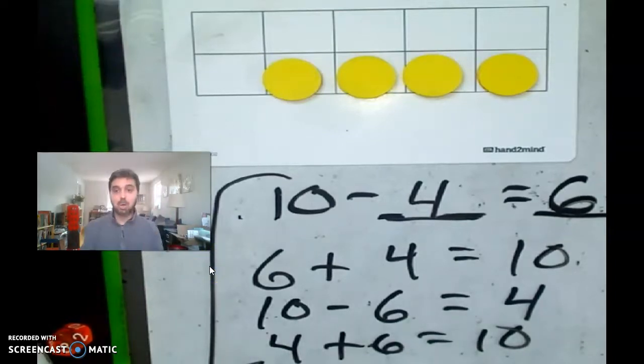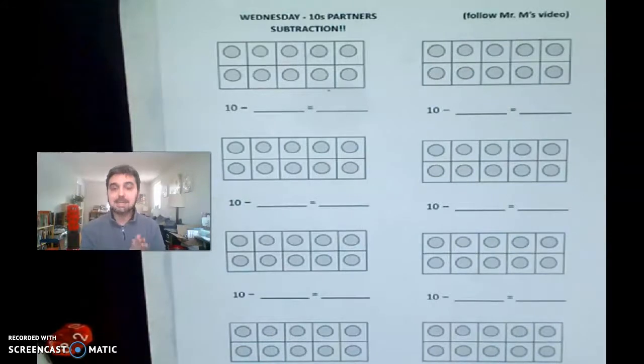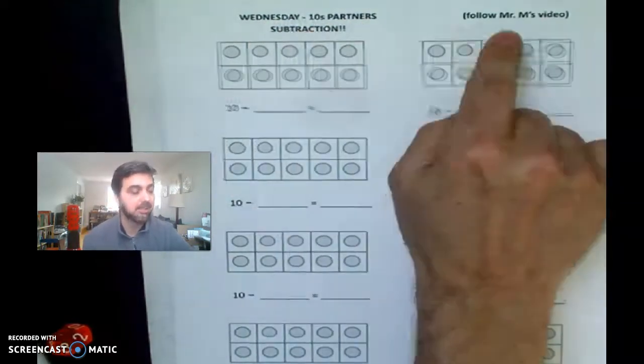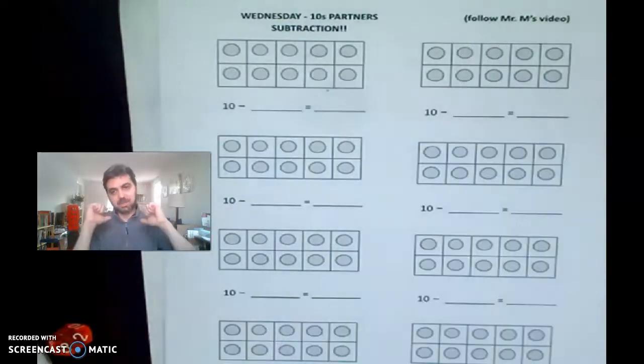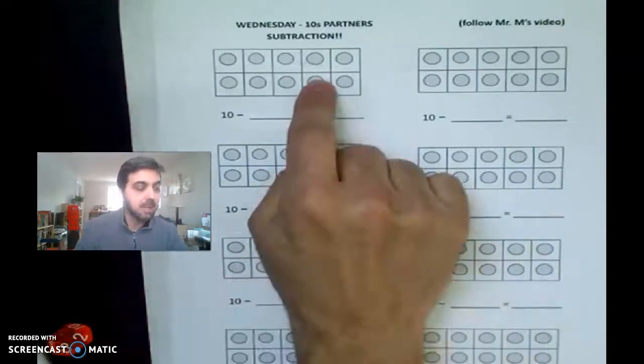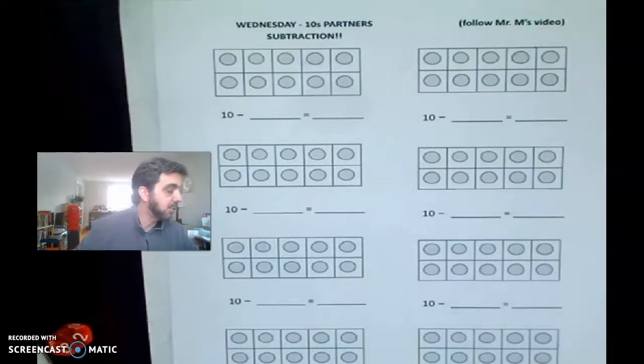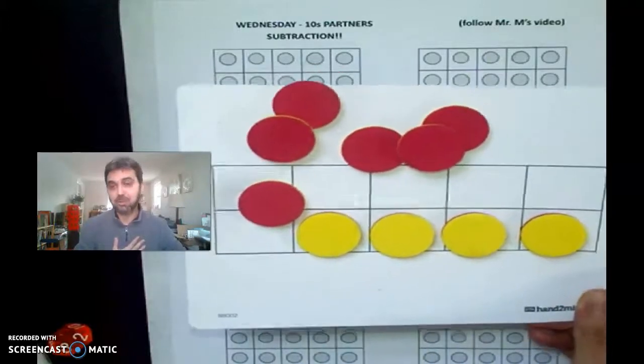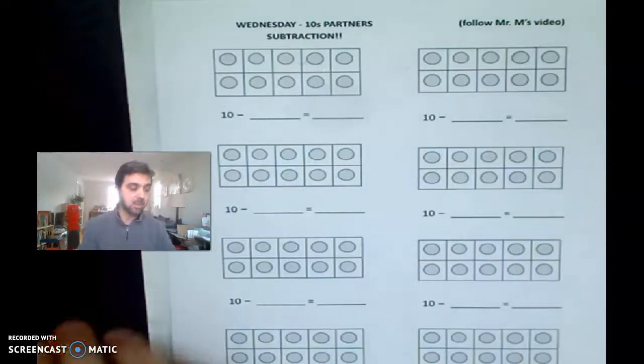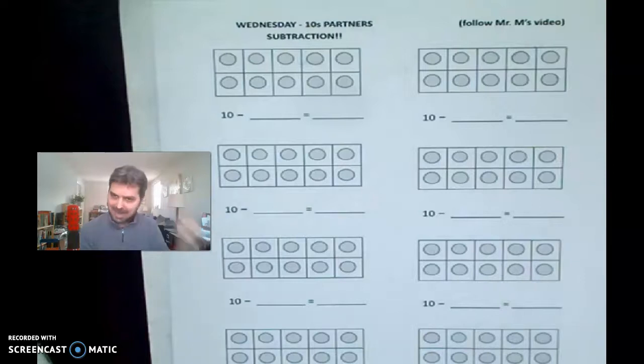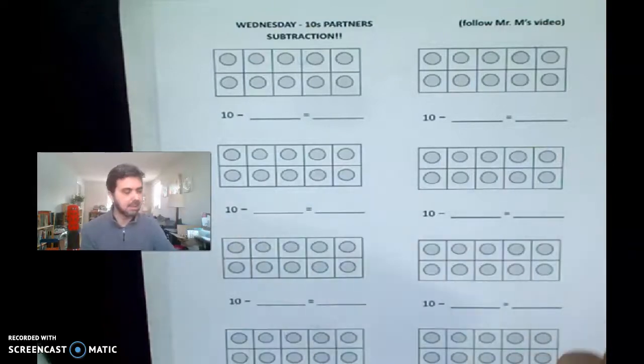Okay, so boys and girls, here's what you are going to do. All right, so very exciting. You're going to play the same game on paper. It'll say Wednesday, tens partners subtraction. Follow Mr. M's video. That's me, Mr. M, Mr. McAndrew, Mr. McMyst, whatever you want, Mr. McMath, whatever you want to call me. You can still use, if you want to use, your 10 frame and counters, you can still use it, but you don't have to if you don't want to. Okay, all right, so here's how this works. You're going to get one of your dice out, and you're going to roll it. Now, you're not going to do it right now. You're going to do it after me, so don't write anything down yet. Okay, you're going to roll it.